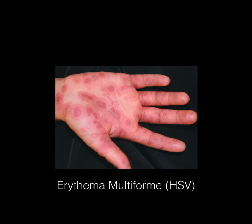This is erythema multiforme. It's basically a target lesion that usually occurs on the trunk or the extremities, and a lot of people confuse this with Lyme disease — so don't make that mistake. With erythema multiforme there's usually more than one lesion and the patient will have no history of camping or other risk factors pointing toward Lyme disease. This is caused by herpes simplex virus, so if a patient gets HSV and then later has this rash, that's the causative agent.